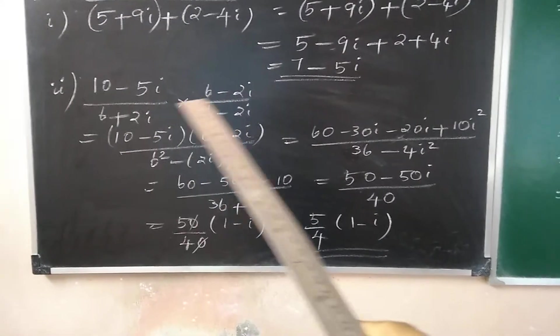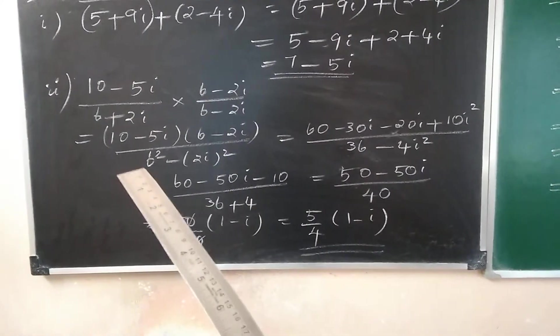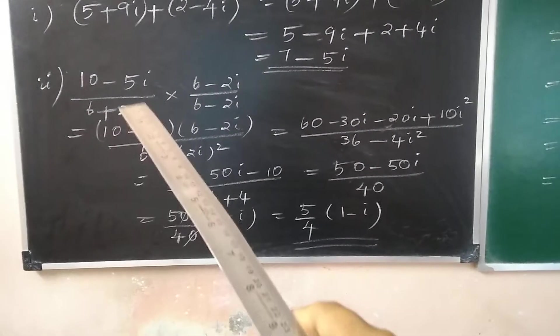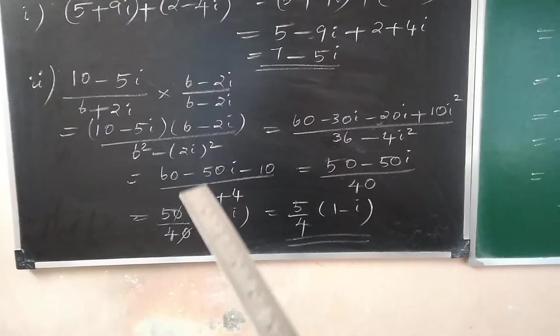Numerator is 10 minus 5i into 6 minus 2i divided by 6 square minus 2i the whole square, because this is of the form a plus b into a minus b.